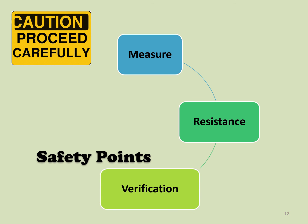Using only one method of placement verification, such as injecting air through the tube to listen for whooshing or gurgling, does not guarantee tube placement. Placement of the tube must be confirmed every time the tube is accessed and at least once per shift using four steps. The patient must be positioned appropriately to avoid aspiration and to promote digestion for feedings.